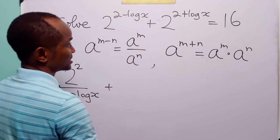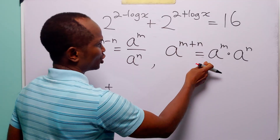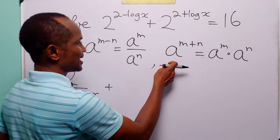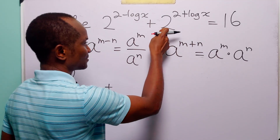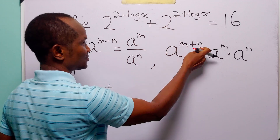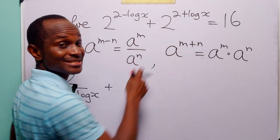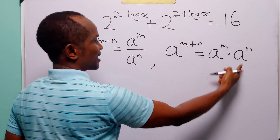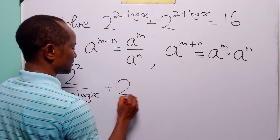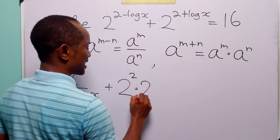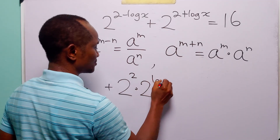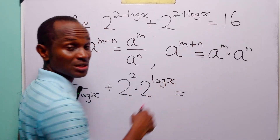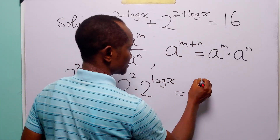Now we have plus. Applying the second law to the second term, a is equal to 2, m is equal to 2, and n is equal to log x. So we can write this as 2 squared multiplied by 2 to the power log x. And of course this equation is still equal to 16.